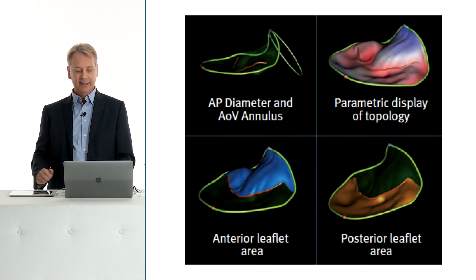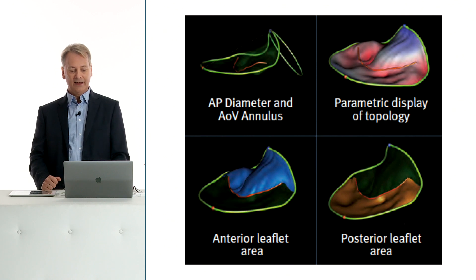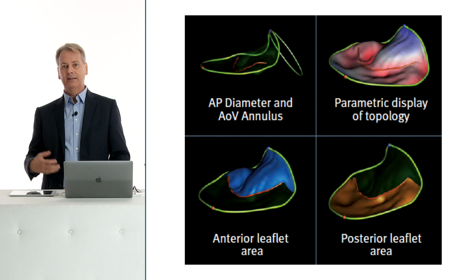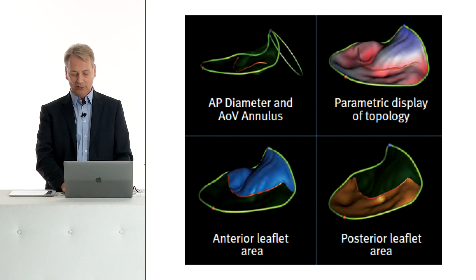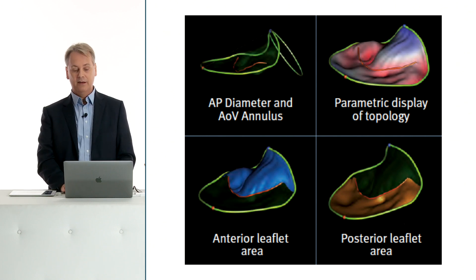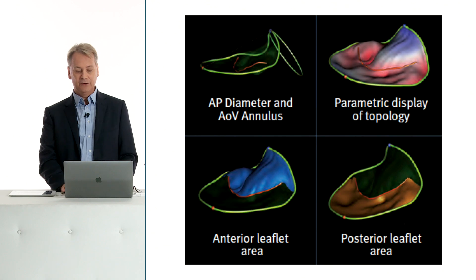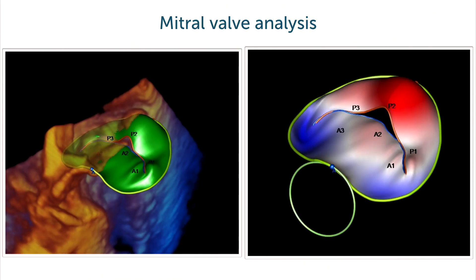Another way of looking at it: you can also assess the aortic diameter and the aortic annulus — an important way of deciding which size of prosthesis to use in TAVI patients, for example, and also how the interaction between the anterior leaflet and the aortic valve is.